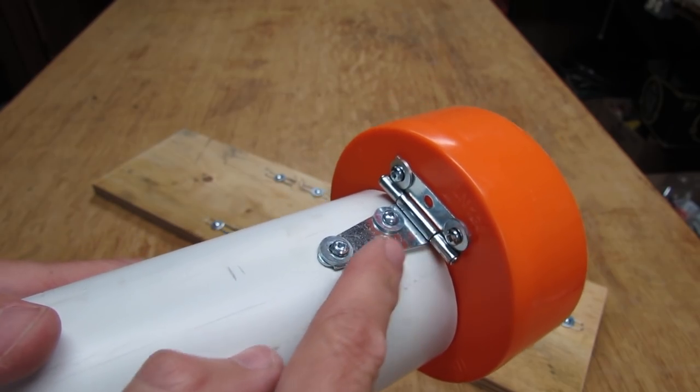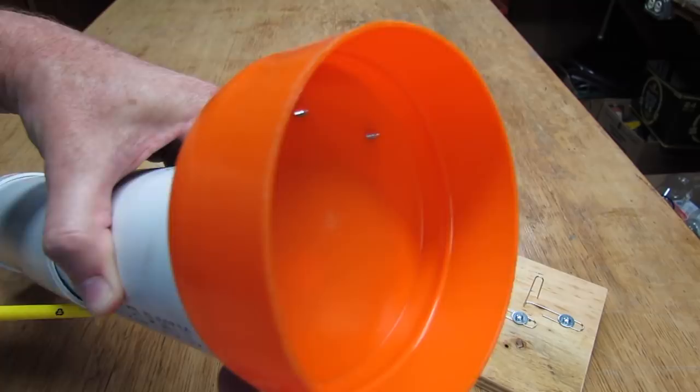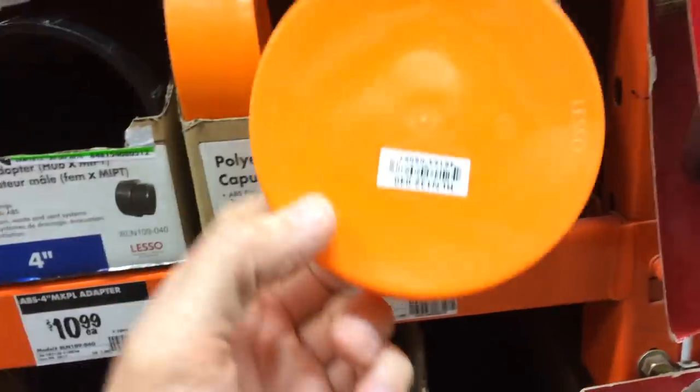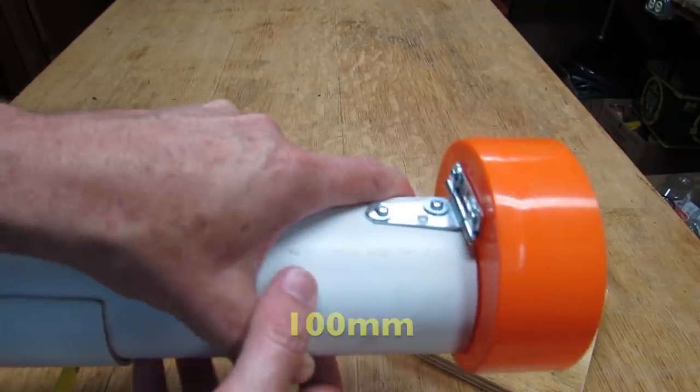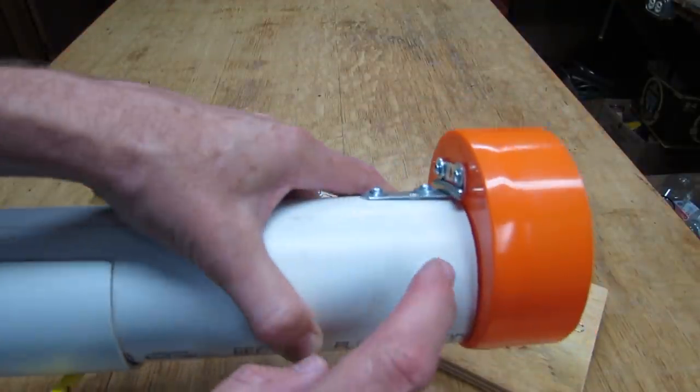And at the front here, this is a hinge I bought at Home Depot. And the door here is what's called a test cap. It's a 4-inch test cap and that way we've got enough room here to put the hinge on for the 3-inch pipe.